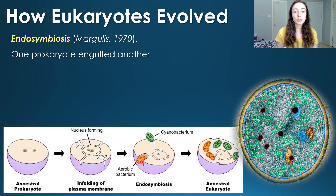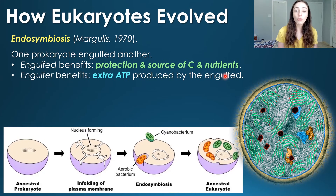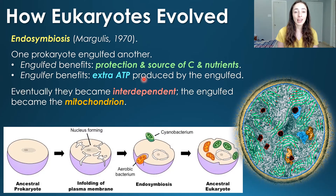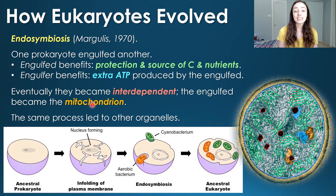But why might these prokaryotes have engulfed one another, and had that been beneficial? The engulfed prokaryote was benefited by protection from the host cell and a source of carbon and nutrients. The host cell was benefited by extra ATP produced by the engulfed cell. Eventually they became interdependent after living in this symbiotic relationship for a while, and the engulfed cell became the host cell's mitochondria. The same process occurred for other organelles like the chloroplast.